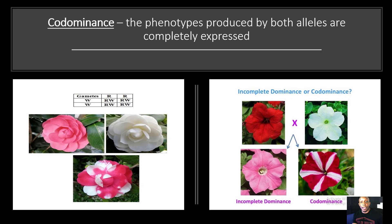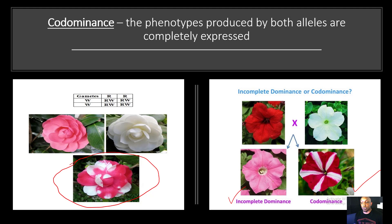Now let's look at co-dominance. In co-dominance, the phenotypes produced by both alleles are completely expressed — you actually see both alleles expressed. So here's a pink flower crossed with a white flower, and in the resulting offspring you can actually see the pink and white alleles expressed phenotypically. The difference between incomplete dominance and co-dominance: in incomplete dominance, a red flower crossed with a white flower produces offspring showing neither red nor white — there's a blending of both alleles. But in co-dominance, a red flower crossed with a white flower produces offspring showing both traits — both red and white are displayed phenotypically in the resulting offspring.